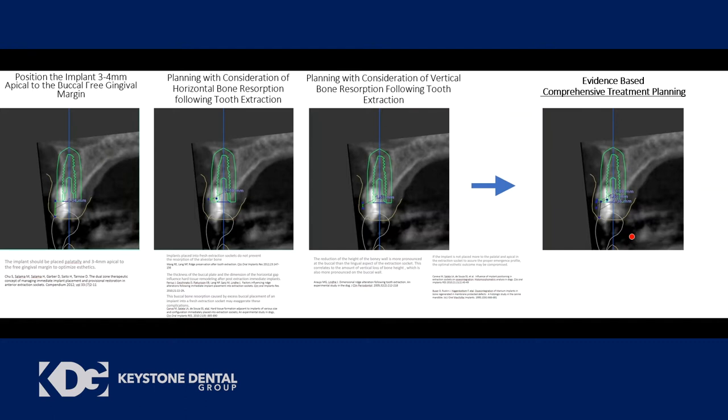How do we organize implant placement? We try to do everything as objectively and scientifically as possible using evidence-based measurements. From the literature, in a vertical orientation we place the implant three to four millimeters apical to where we anticipate developing the buccal free gingival margin. This is well established — cited from Salama, Garber, and Tarnow.